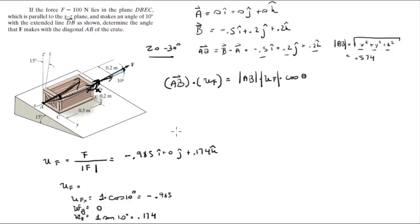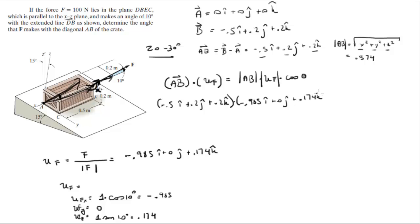Now we have a unit vector pointing in that direction. To find the angle between them, you take the dot product: AB · (unit F) = (−0.5i + 0.2j + 0.2k) · (−0.985i + 0j + 0.174k). The magnitude of AB is 0.574 and the magnitude of a unit vector is 1. So: (0.5 × 0.985 + 0.2 × 0 + 0.2 × 0.174) divided by 0.574, and you solve for beta.